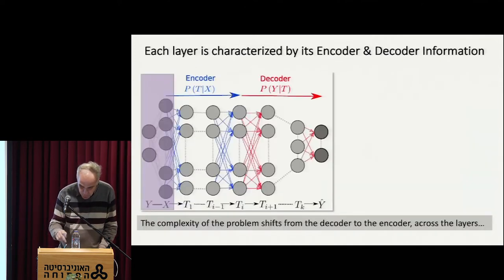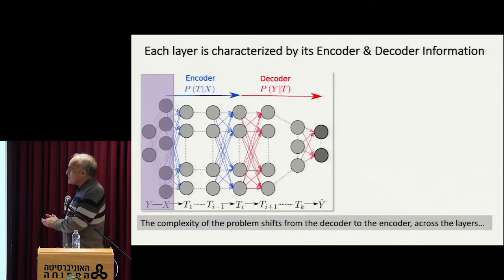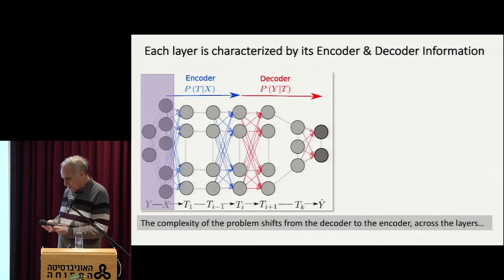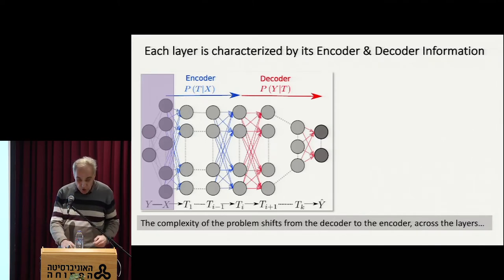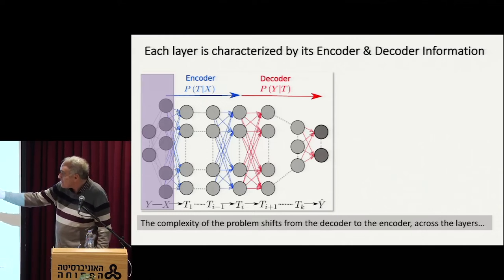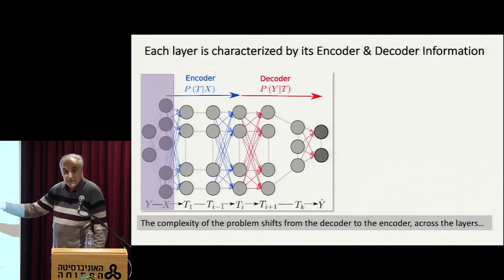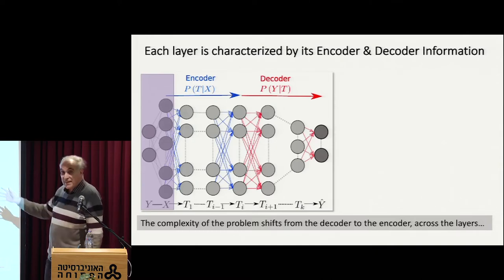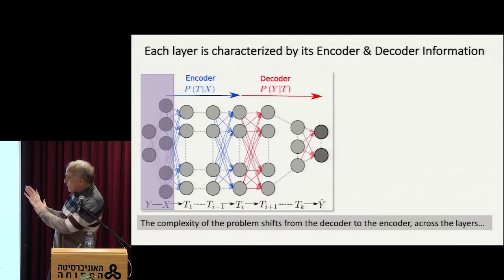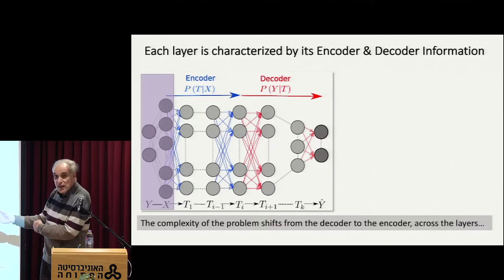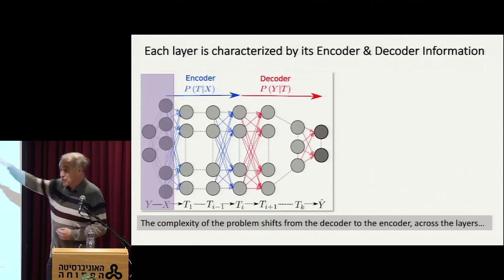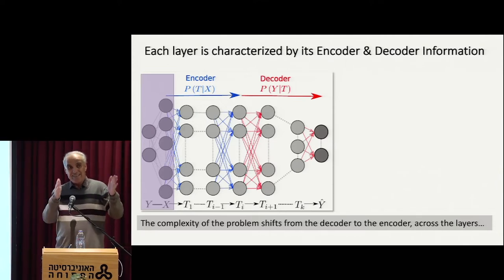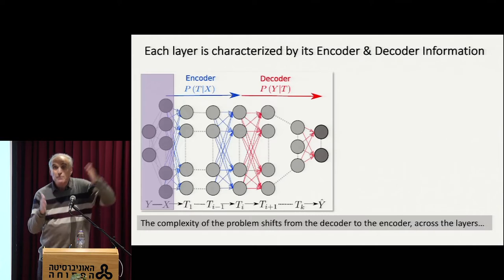Each layer is characterized by what I call an encoder, which is essentially the stochastic map from the input to the layer — what is encoded by this particular layer. And there is a decoder — how the output is encoded from this layer. I can also think about the optimal decoder: if I had the representation of the layer, what would have been my best decoding, essentially predicting the true Y.